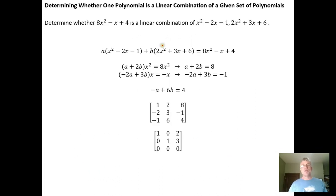This is going to work the same way that it did when we showed that vectors in R2 were linear combinations of a given vector, when vectors in R3 were a linear combination of a given vector, and in the previous video, when we showed that one 2x2 matrix was a linear combination of a given set of 2x2 matrices.